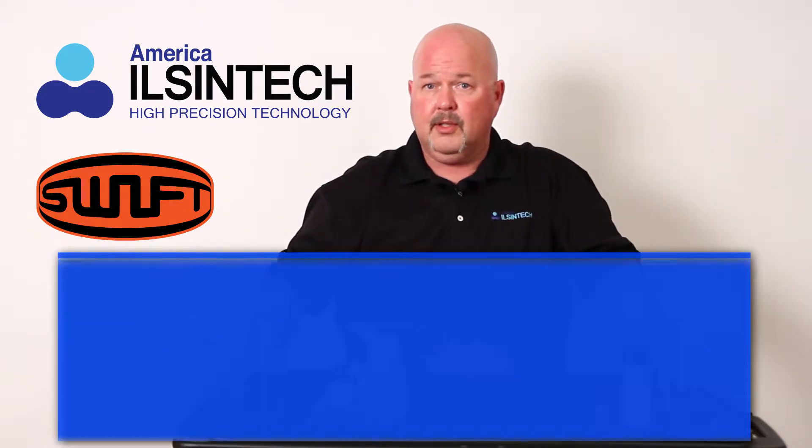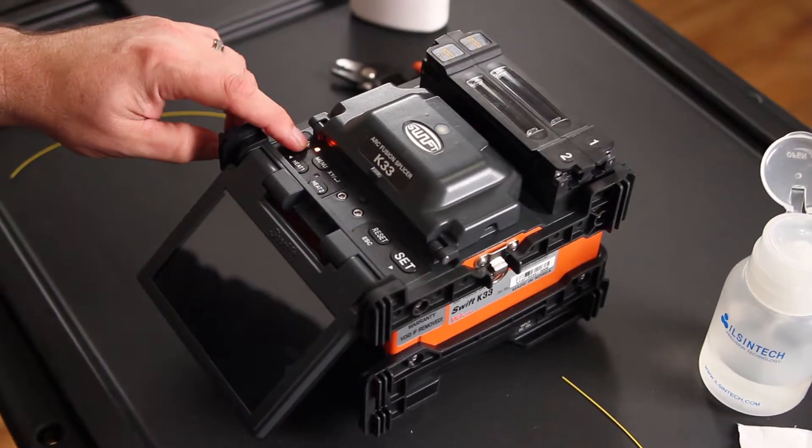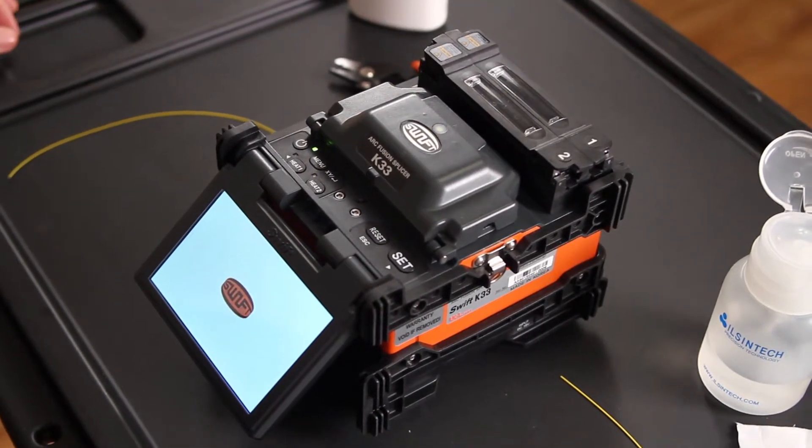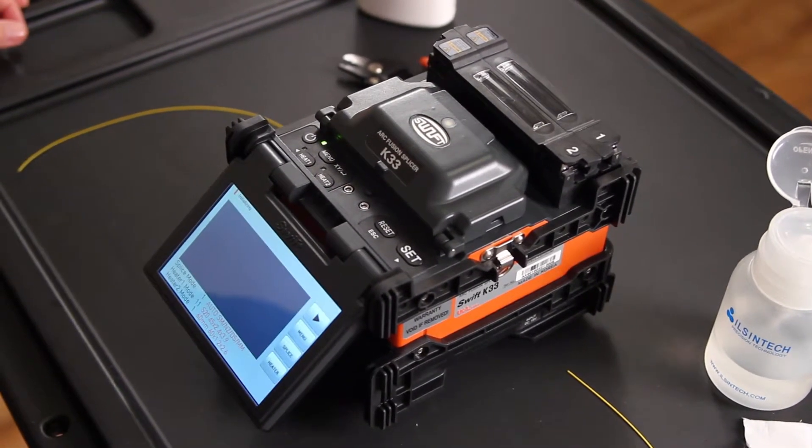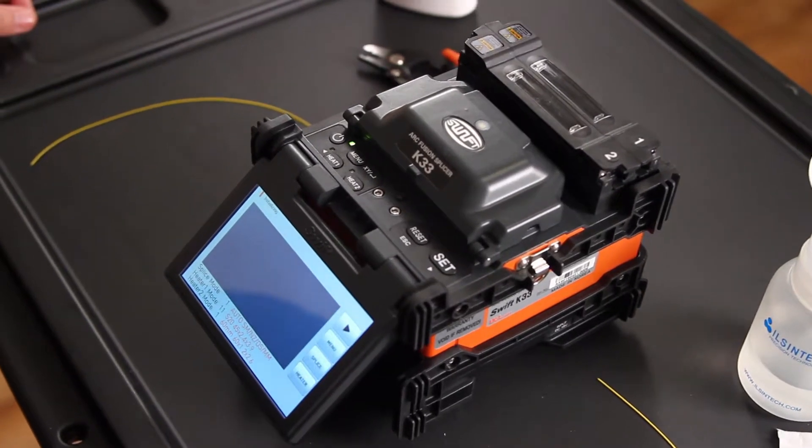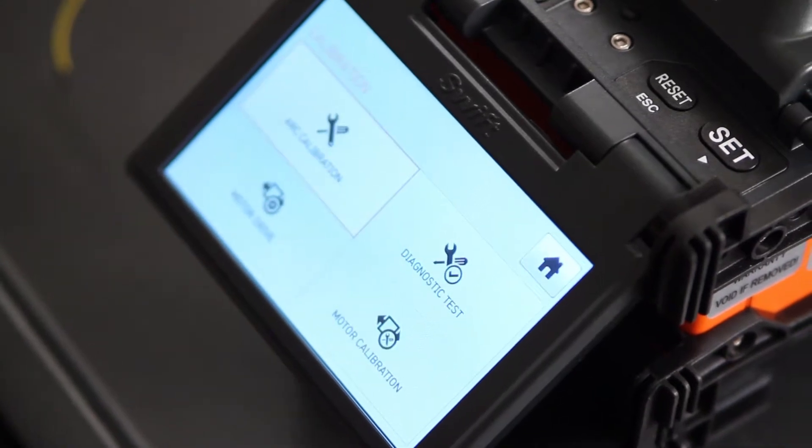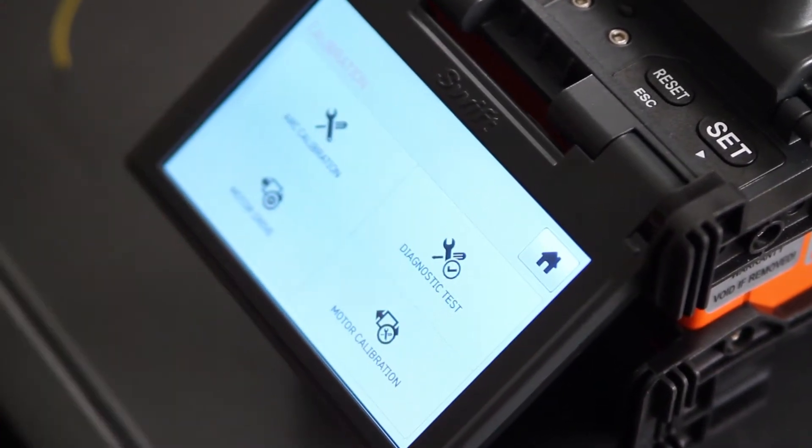First, turn your splicer on. Once it's come to your home screen, press your menu, calibration, arc calibration,